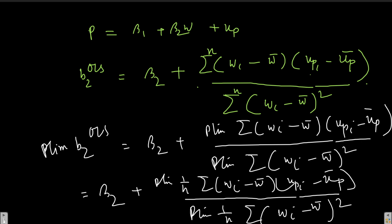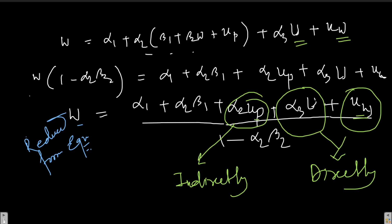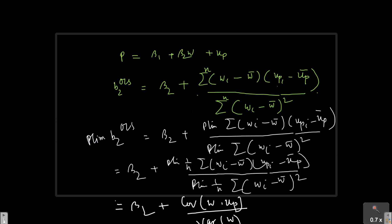We can substitute the reduced form expression for w and see that Cov(w, u_p) is not zero, because w is indirectly related to u_p through the reduced form equation. Since this covariance term is not zero, the OLS estimator is biased. Furthermore, even as n tends to infinity, b2_OLS does not converge to beta_2, which is the problem of inconsistency.